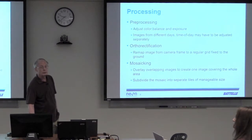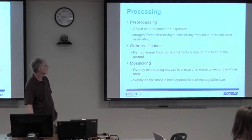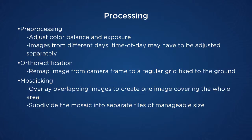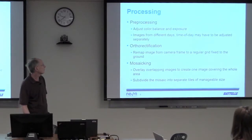There are three major steps to processing. The first is to adjust the color balance and exposure. Since the images may be taken on different days and on the same day over a period of several hours where conditions change, you may have to adjust the color balance and exposure separately over the time period.